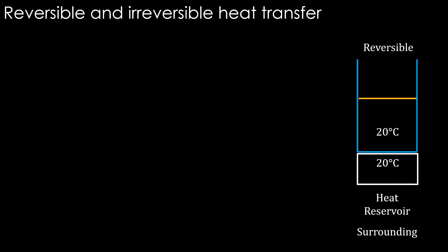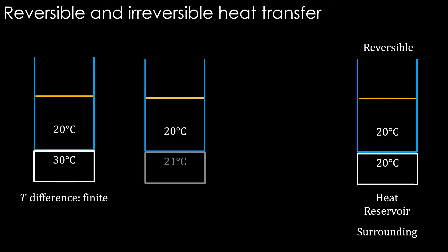Now consider the reservoir at 30 degrees Celsius. Then the temperature difference between the system and the surrounding is finite. If it is 21 degrees Celsius, then also it is finite. In both cases, heat will flow from the reservoir to the system in an irreversible manner. One thing we can sense here is that the one on the right is closer to a reversible case.